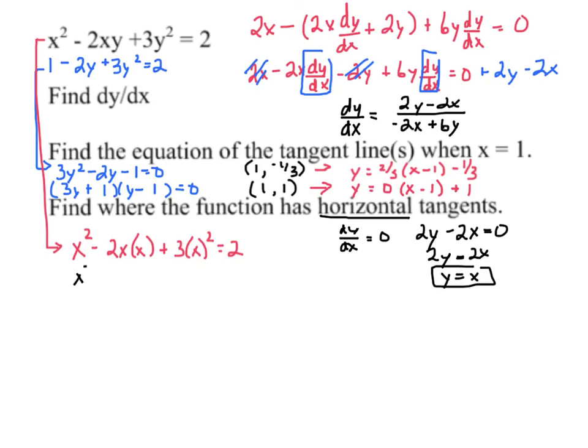So we've got x² minus 2x² plus 3x², which means that 2x² equals 2. So x² is equal to 1, which means x is plus or minus 1.